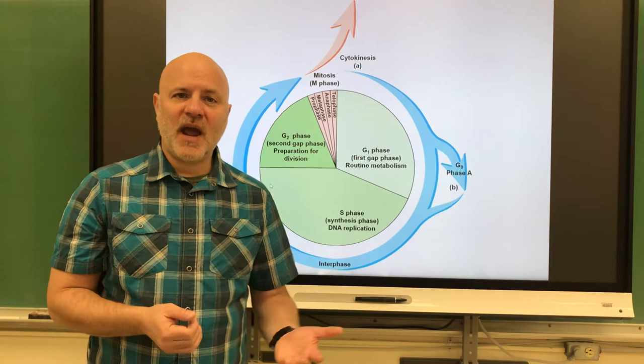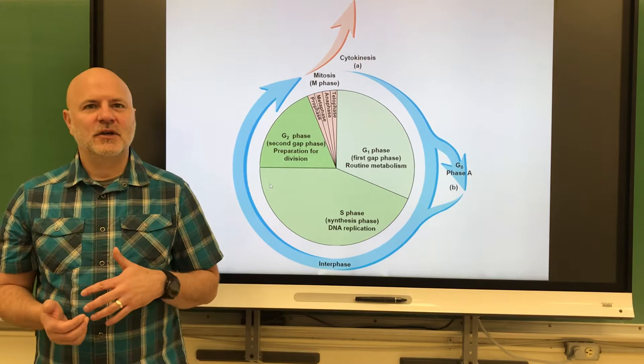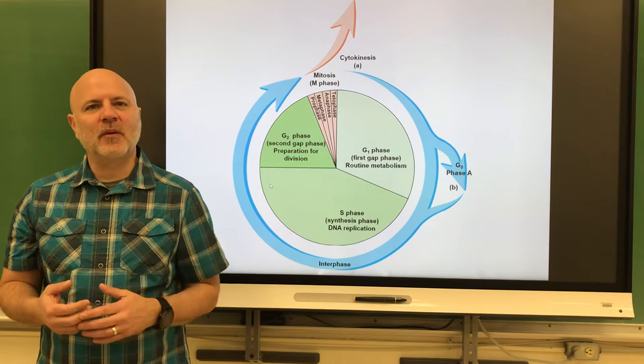Next is the haploid number, abbreviated 1N. This is a cell condition in which there is only one set of chromosomes. This is found in gametic cells — egg cells and sperm cells. You have diploid cells, but when you make a haploid cell, an egg or sperm cell, you're literally giving off only half of your genetics. The haploid number for humans is 23, which is half of the diploid number.